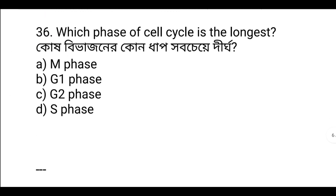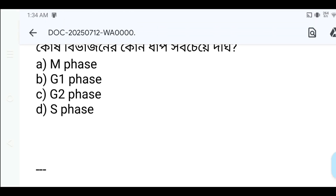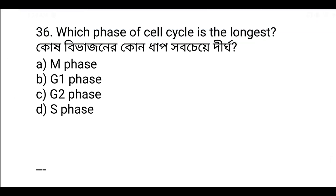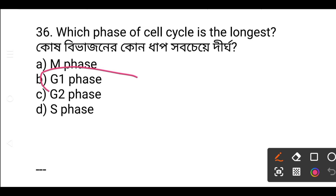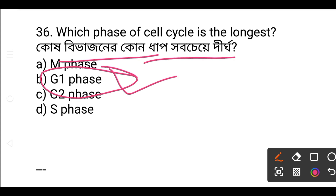Which phase of the cell cycle is the longest? The answer is option B — G1 phase. G1 phase is the longest phase of the cell cycle.